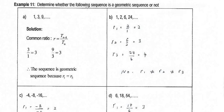How do we determine whether a sequence is geometric or not? By finding the common ratio. First example: 1, 2, 6, 24. 2 divided by 1 is 2, 6 divided by 2 is 3, 24 divided by 6 is 4. The sequence does not have a common ratio. Therefore, this is not a geometric sequence.